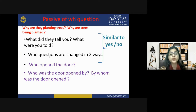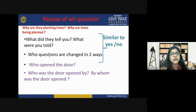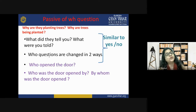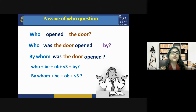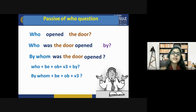For passive of 'who' questions, there are two forms. 'Who opened the door?' → 'Who was the door opened by?' or more correctly, 'By whom was the door opened?' The second form is more commonly used. Structure: by whom + be + object + verb third form.